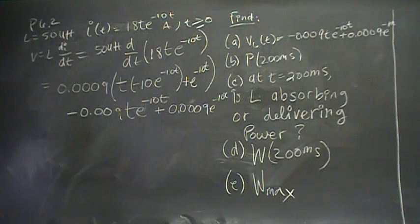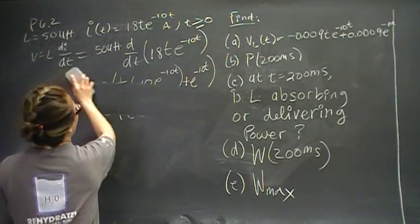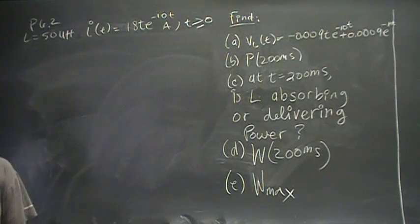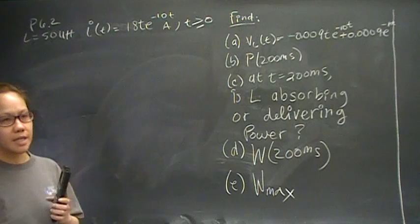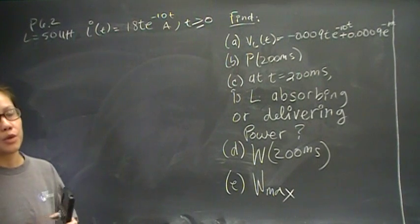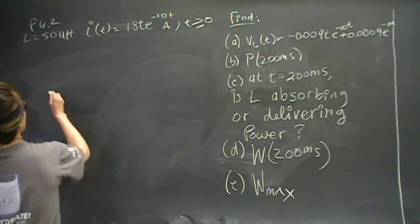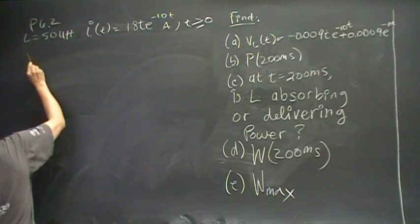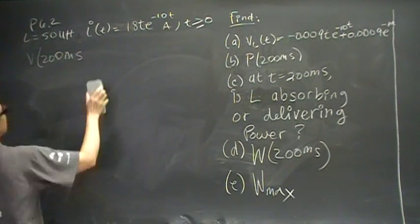Now we want to find power at 200 microseconds. And you can do that by using the power function, which is P equals L I dI/dt. We found dI/dt as part of finding the voltage, or we have already found the voltage function. We can do P equals VI. It's your choice. So I'm going to do P equals VI.